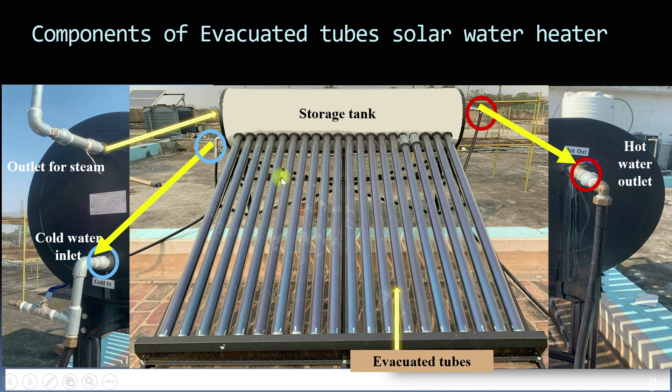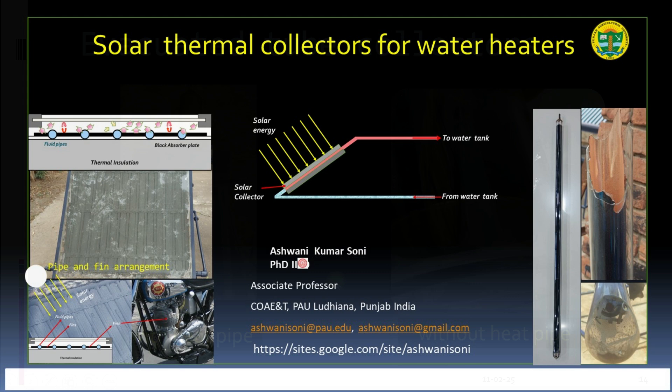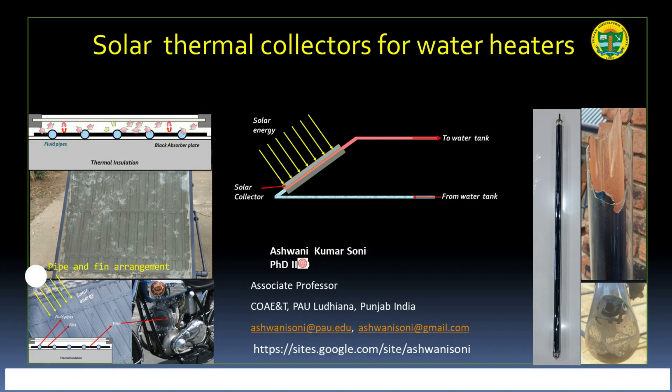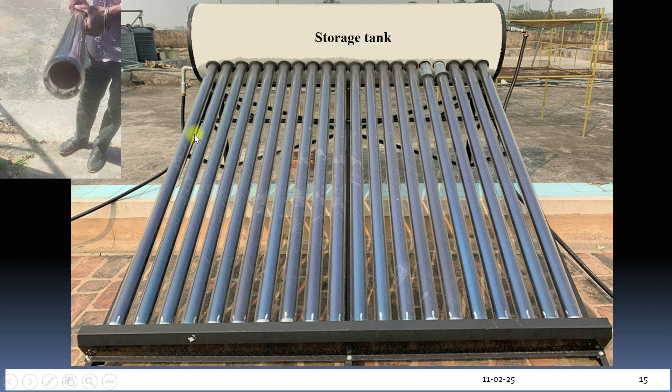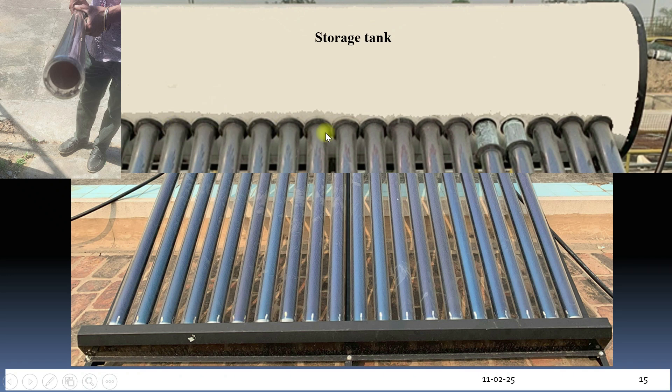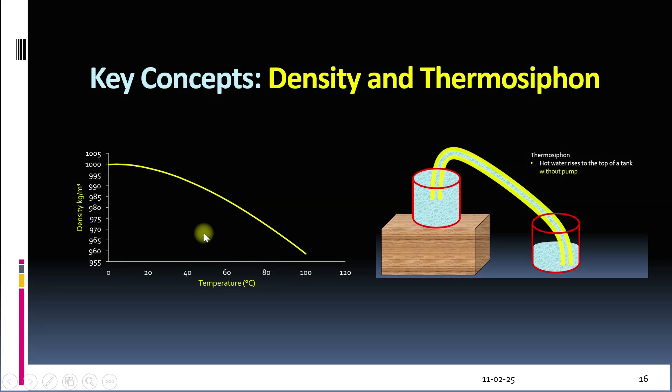In an earlier video on solar thermal collectors, we discussed two types of evacuated tube collectors, those with and without heat pipes. You can see the link of the video in the top right hand corner of your screen and description of this video. The collector used in this solar water heater is an evacuated tube collector without a heat pipe. The open ends of the evacuated tubes are inserted into the tank and sealed as shown here. The lower sealed ends of the tubes are supported at the bottom of the collector. Before we see the system in action, let's quickly go over two important concepts that make this system work.